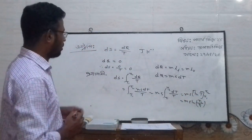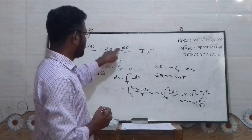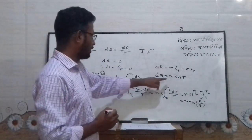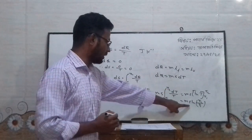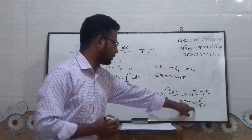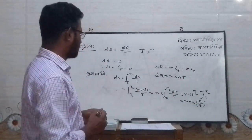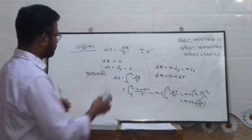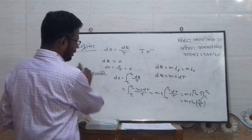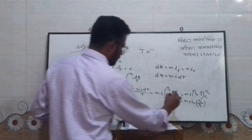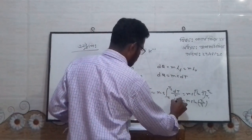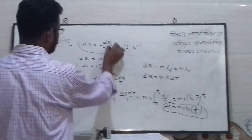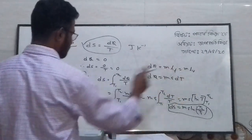We are going to take a look at MLF or MLB and we are going to take a look at this — specifically ms ln(T2/T1).